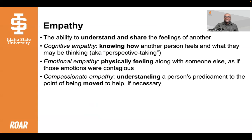Now we turn our attention to empathy as a companion to cultural humility. Empathy is defined as the ability to understand and share the feelings of another. There are three types of empathy. Cognitive empathy is knowing how another person feels and what they may be thinking — also known as perspective taking or putting oneself in someone else's shoes. Emotional empathy is physically feeling along with someone else, as if those emotions were contagious. Those who identify as empaths have this ability and find it difficult to dissociate their own feelings from others. Compassionate empathy is the root of change agency — it's understanding a person's predicament to the point of being moved, if necessary. This is the first step to allyship, advocacy, and accompliceship.